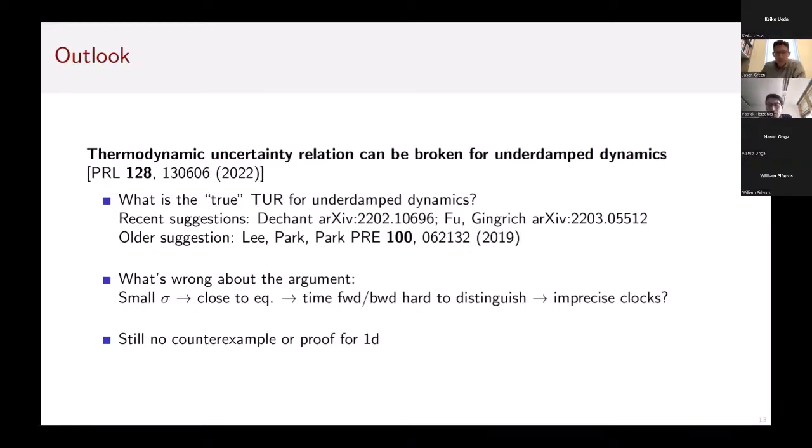Also I'm quite confused about what was wrong with my argument that I presented on the first slide—that if you're close to equilibrium it would be hard to outrun thermal fluctuations. Why does this not lead necessarily to imprecise clocks? What is wrong about that basic argument for the TUR? Also one open problem is that we still have no counter example or proof in one dimension. We don't know whether for simple one-dimensional systems the TUR is also broken. I hope that by the time we have our next meeting we will find better answers. With that, I'd like to thank you for your attention.